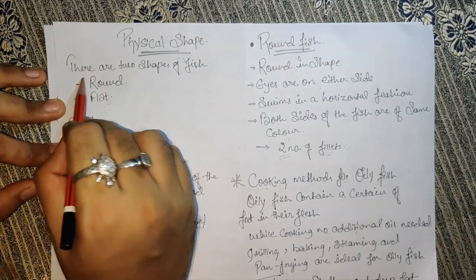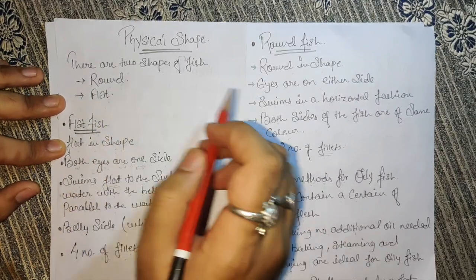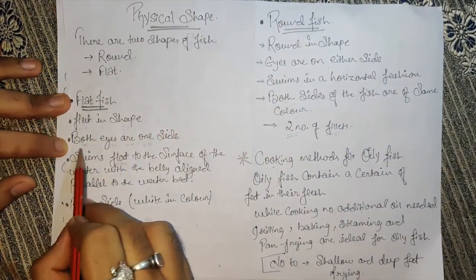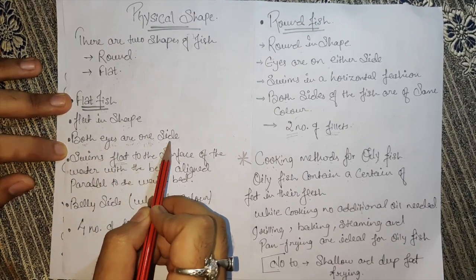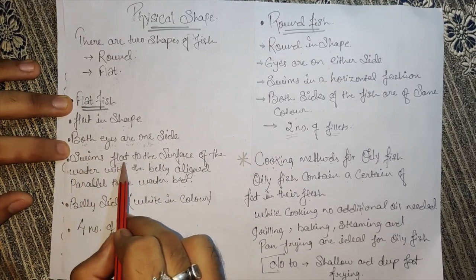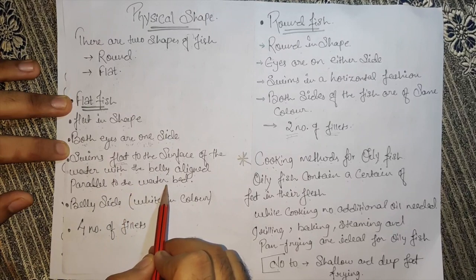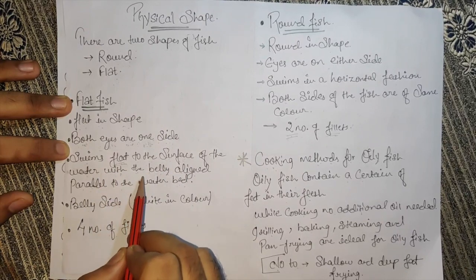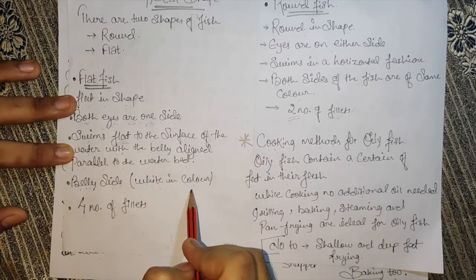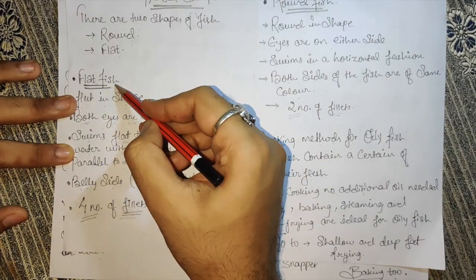Physical shape — there are two shapes of fish: one is round and one is flat. A flat fish is flat in shape; both eyes are on one side. It swims flat to the surface of the water with the belly aligned parallel to the water bed. The belly side of a flat fish is white in color. We receive four fillets from a flat fish.